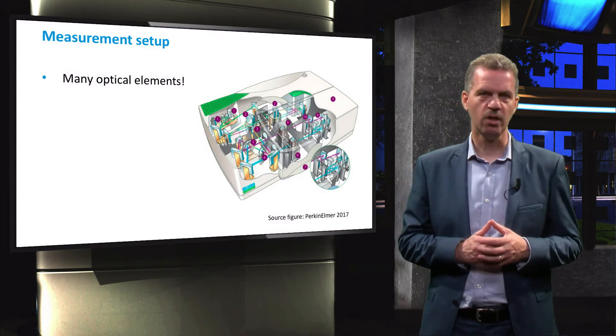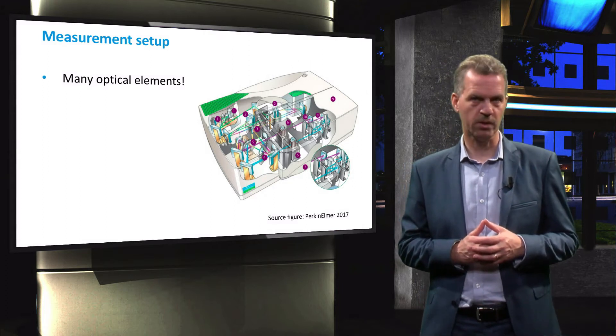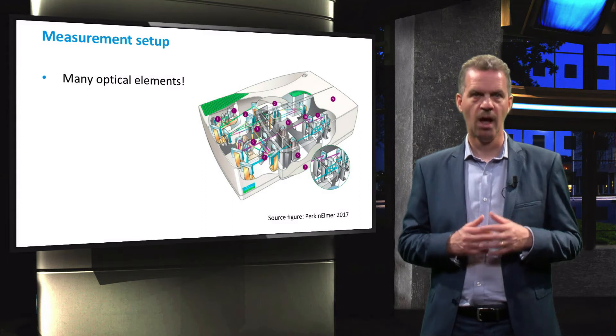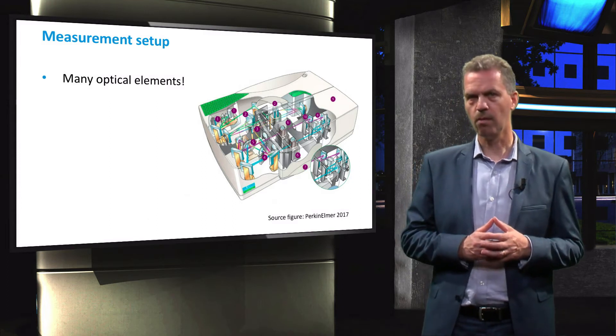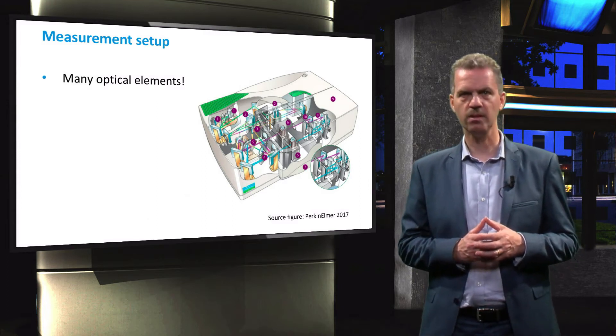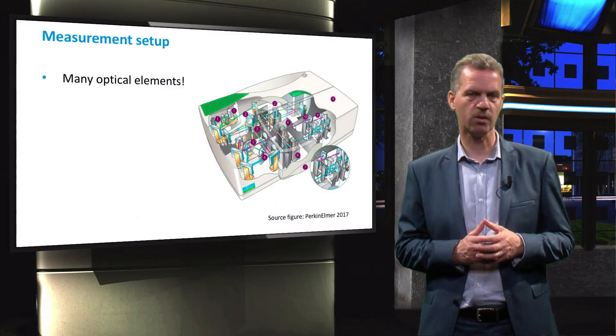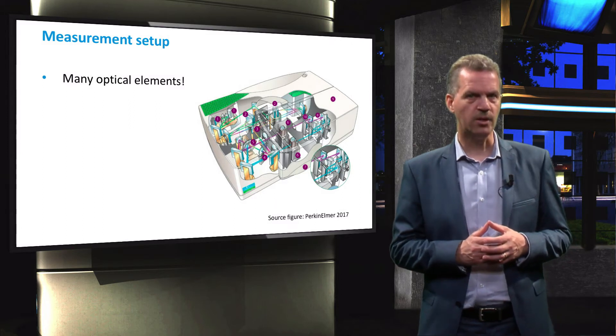This figure shows an overview of a Perkin-Elmer spectrometer. This is a versatile instrument for measuring reflectance and transmittance in various configurations. As you can see, there are many optical elements on the inside of the spectrometer,